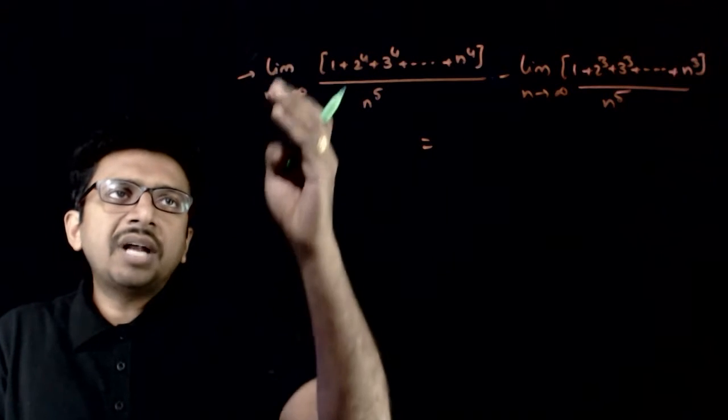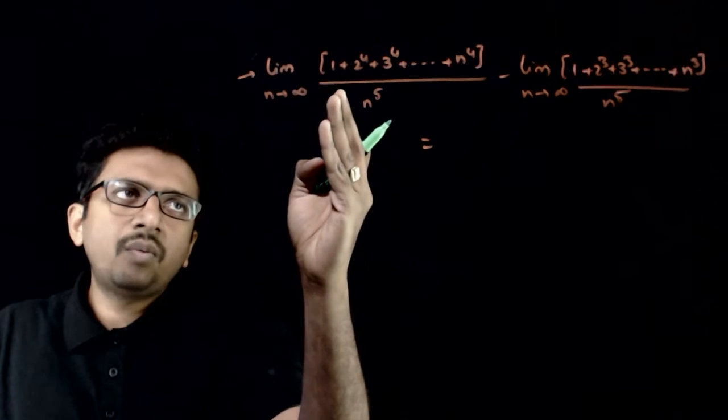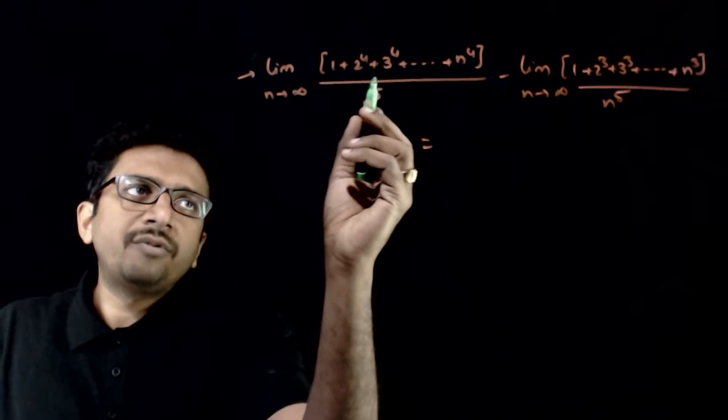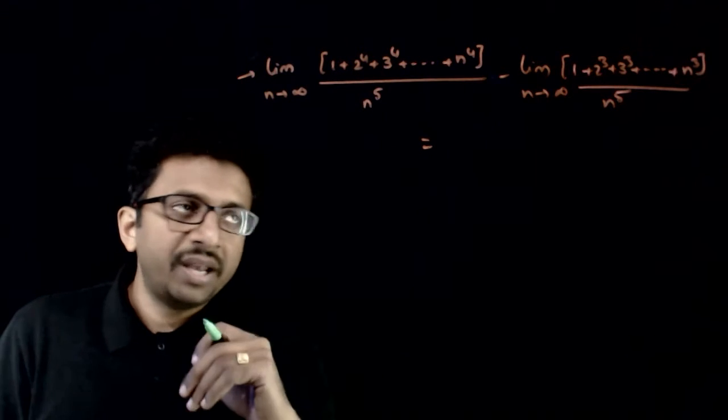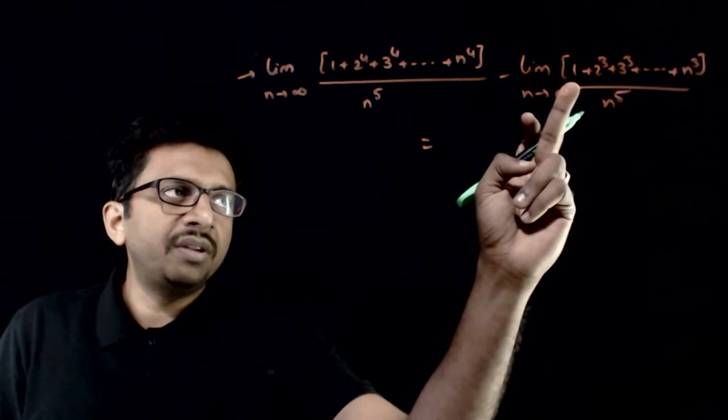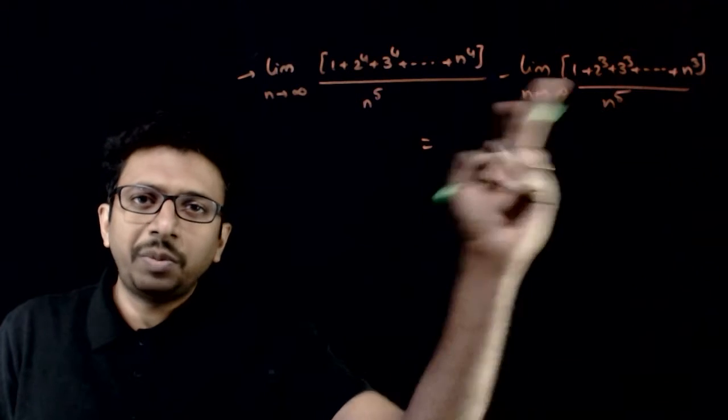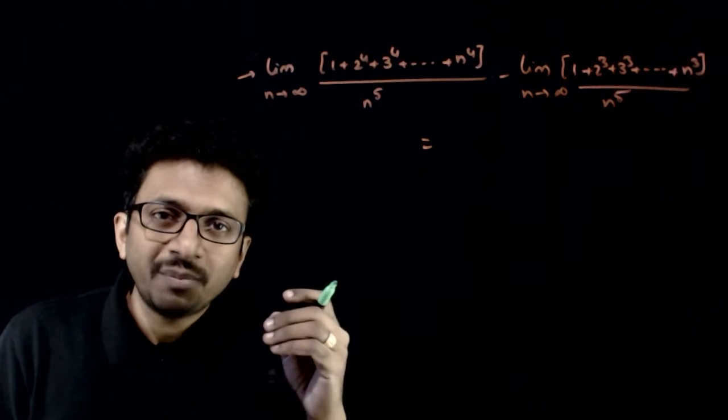Welcome students. In this question, you are asked to find the limit as n tends to infinity of (1 + 2^4 + 3^4 + ... + n^4) divided by n^5, minus the limit as n tends to infinity of (1 + 2^3 + 3^3 + ... + n^3) divided by n^5.